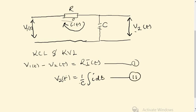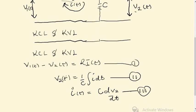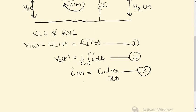From here we can find I by making I the subject. We can say I(t) is equal to C dV2/dt. We can call this equation 3. Since we have I, we can put this I in equation 1.